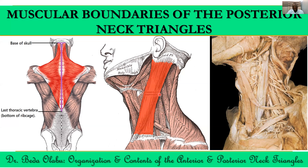Note that the cutaneous nerves usually arise in relation to the posterior border of sternocleidomastoid. The muscle itself overlies a number of structures deep to it, but those are mainly covered under the anterior triangle — things like the internal jugular vein and common carotid artery. The third muscle is the omohyoid, which has an inferior belly, a superior belly, and an intermediate tendon held lower down by the investing fascia — we call that extension the omohyoid sling. The inferior belly of omohyoid is in the posterior triangle; the superior belly is in the anterior triangle. It is one of the infrahyoid muscles, therefore innervated by the ansa cervicalis.